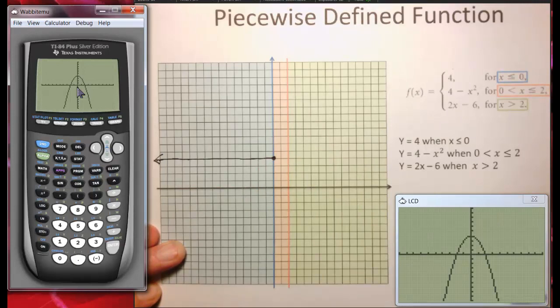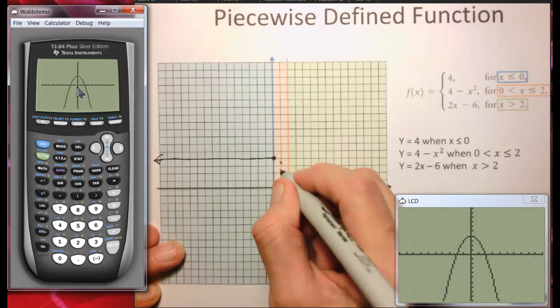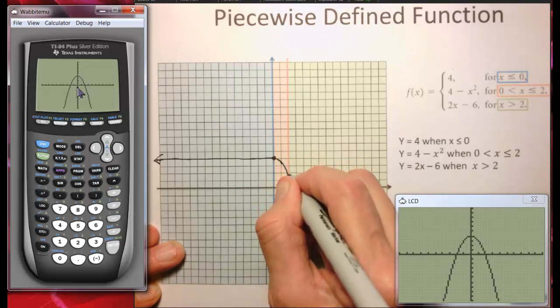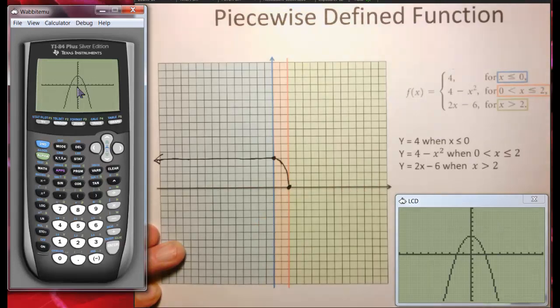On the other hand, if x is 2, then 2 squared is 4. 4 minus 4 is 0. Notice that x can actually equal 2. So when we bring our parabola down here, I'm going to actually make a closed circle right there.